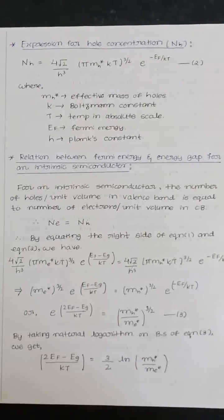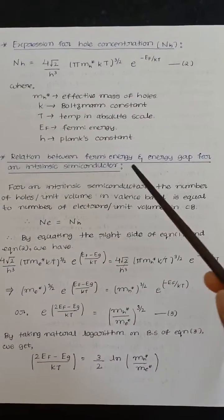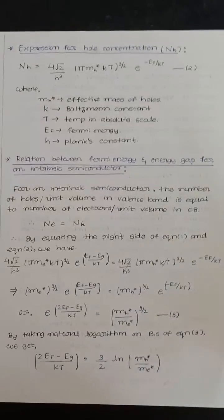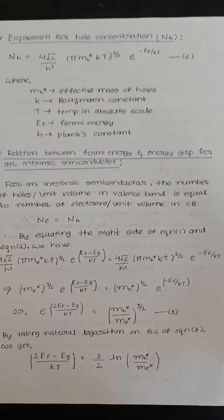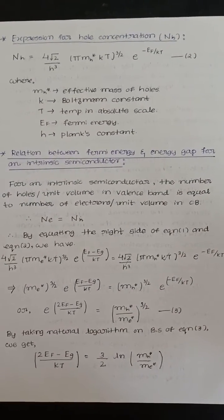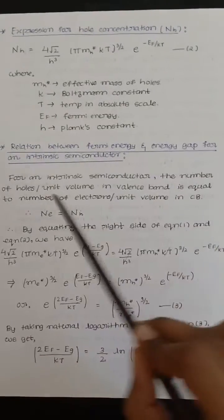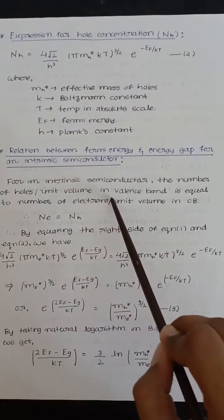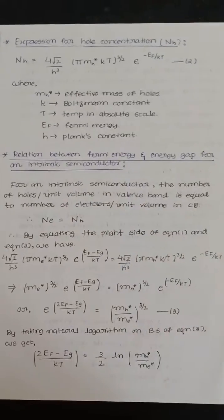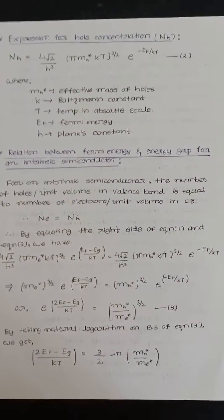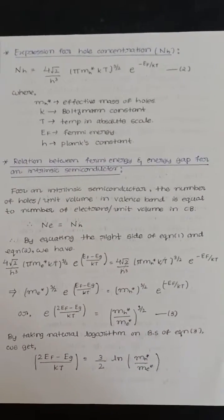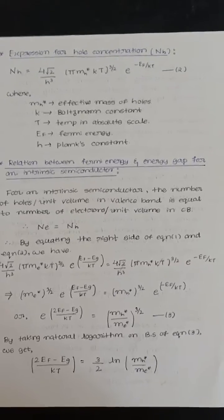Next one is relationship between Fermi energy and energy gap for an intrinsic semiconductor. In case of intrinsic semiconductor, the number of holes per unit volume in the valence band equals the number of electrons per unit volume in the conduction band.